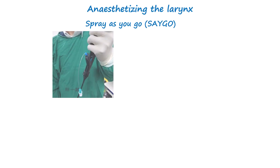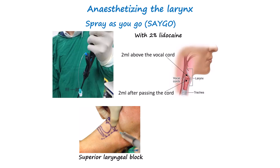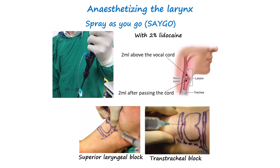For anesthetizing the larynx, the spray-as-you-go technique is commonly used. Here, 2% lidocaine is delivered through an epidural catheter inserted via the working channel of the fibroscope. Small amounts of lidocaine are instilled directly onto the vocal cords and trachea as the scope passes through — typically 2 ml applied just above the vocal cords, followed by 2 ml below them. Alternatively, more invasive techniques like transtracheal block or superior laryngeal nerve block can be used, which will be discussed in the next video.